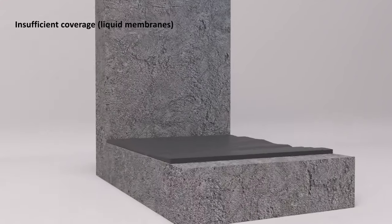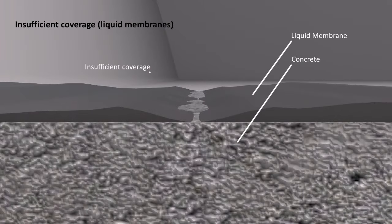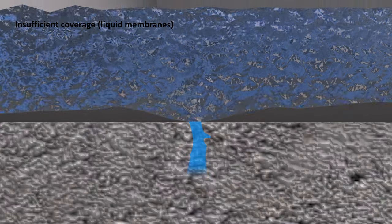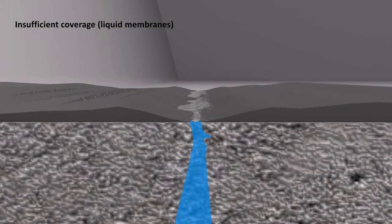Insufficient coverage or uneven application of a liquid membrane prevents establishing a uniform thickness of the waterproofing layer. This can result in the failure of the application as thinner parts of the membrane get damaged quicker.